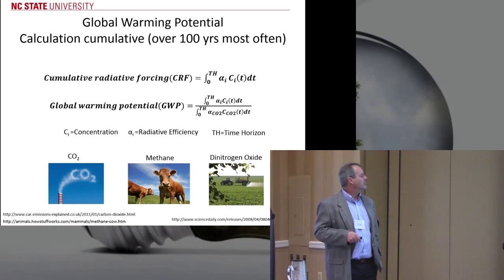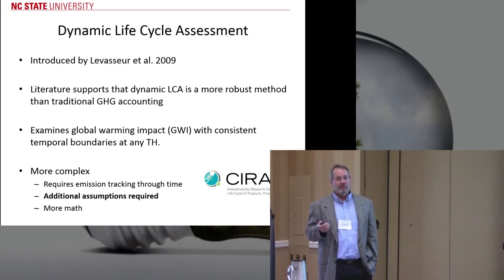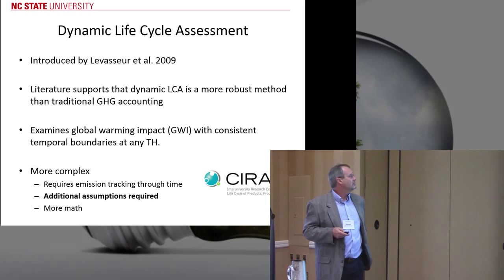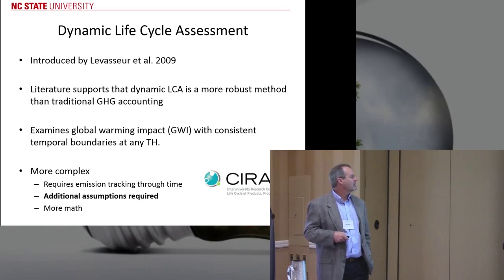We mainly focus on three gases for biofuels when calculating global warming potential. What we're going to use instead of that static approach where everything occurs at time equals zero, is dynamic life cycle assessment, where we look at the timing of emissions and also the removals of CO2 from the environment. This is a bit more complex, with additional assumptions and more math, but we think it's more robust.